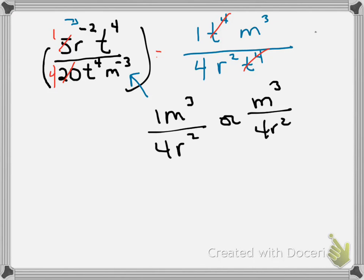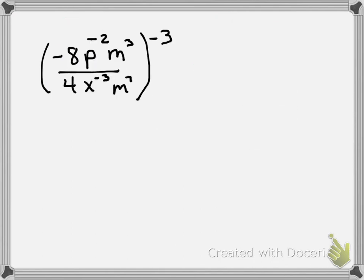Let's look at one that's a little bit more challenging. This one has a negative exponent on the outside, so I've got to look at everything that has an exponent. The 8 has a 1 on it and the 4 has a 1 on it. We can reduce these early if we want to — 8 and 4 reduce to 1 and 2, and it's actually negative 2.